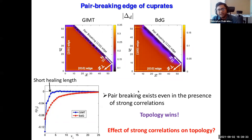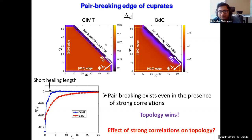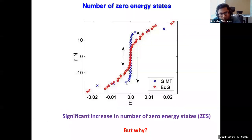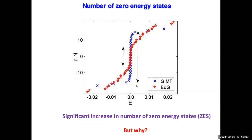Naively, since the zero-energy states are topologically protected and we haven't broken time reversal or translational symmetry along the edge, we should still have pair breaking. That's what happens. But does this mean strong correlation has no effect? Not so.